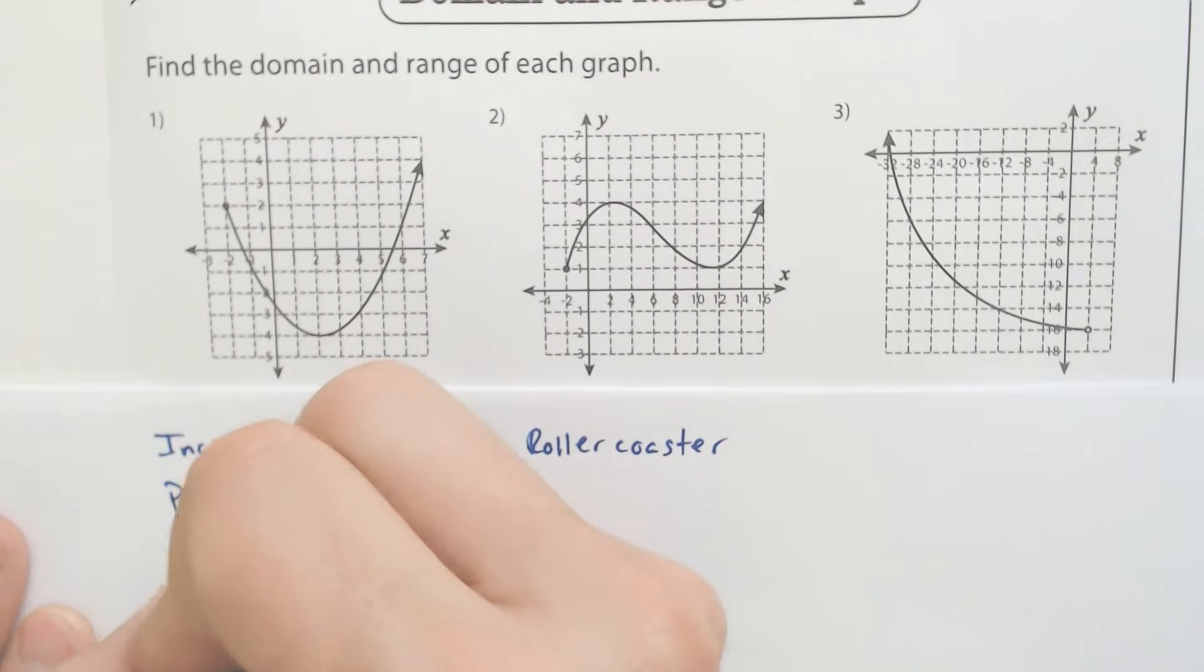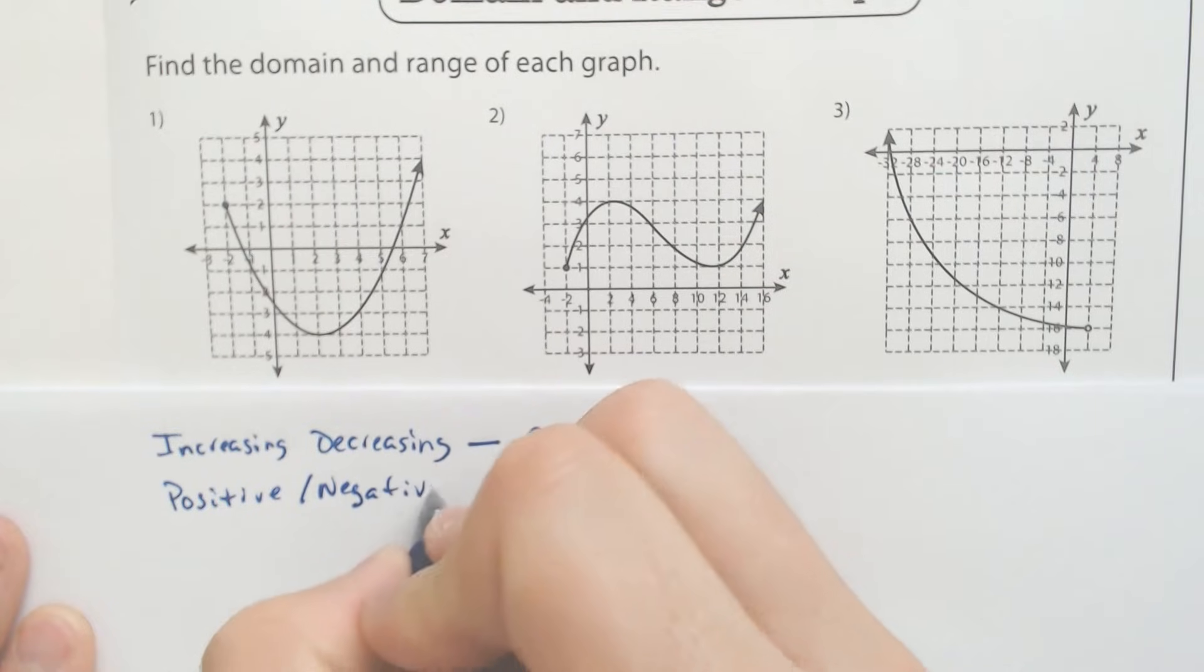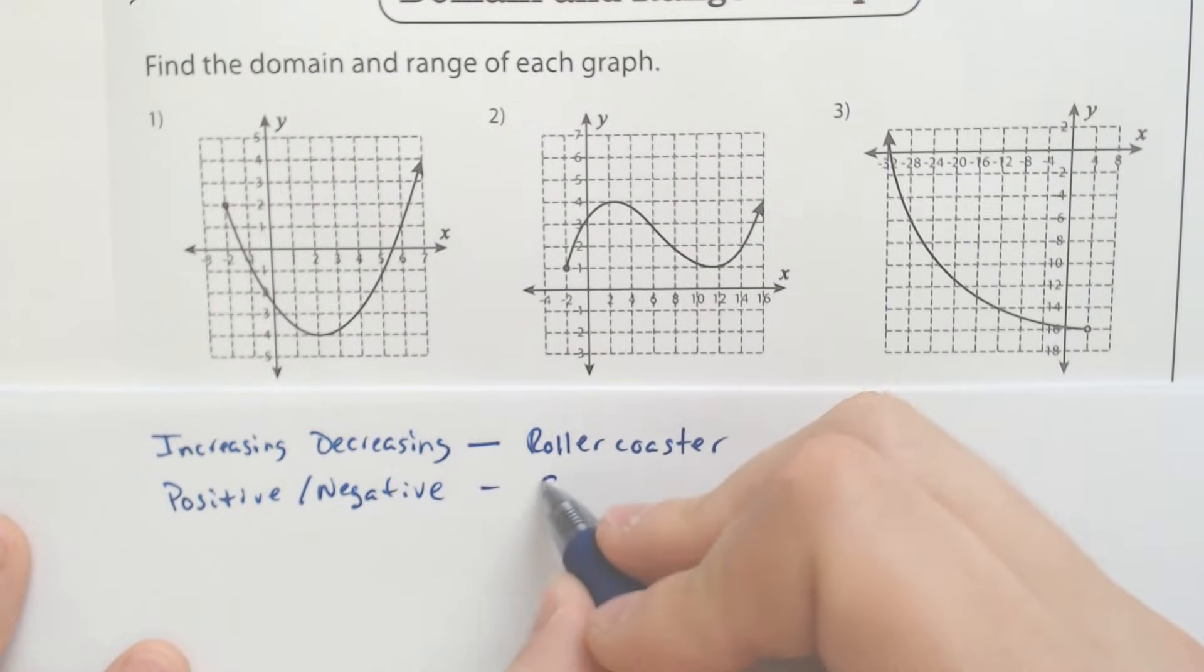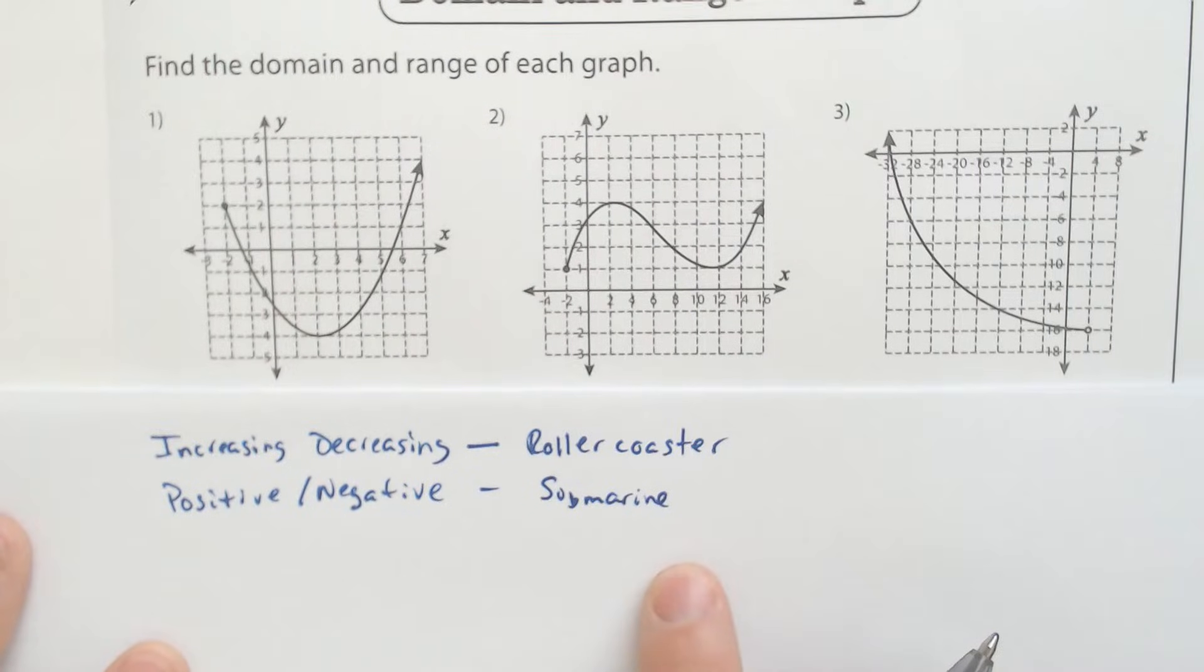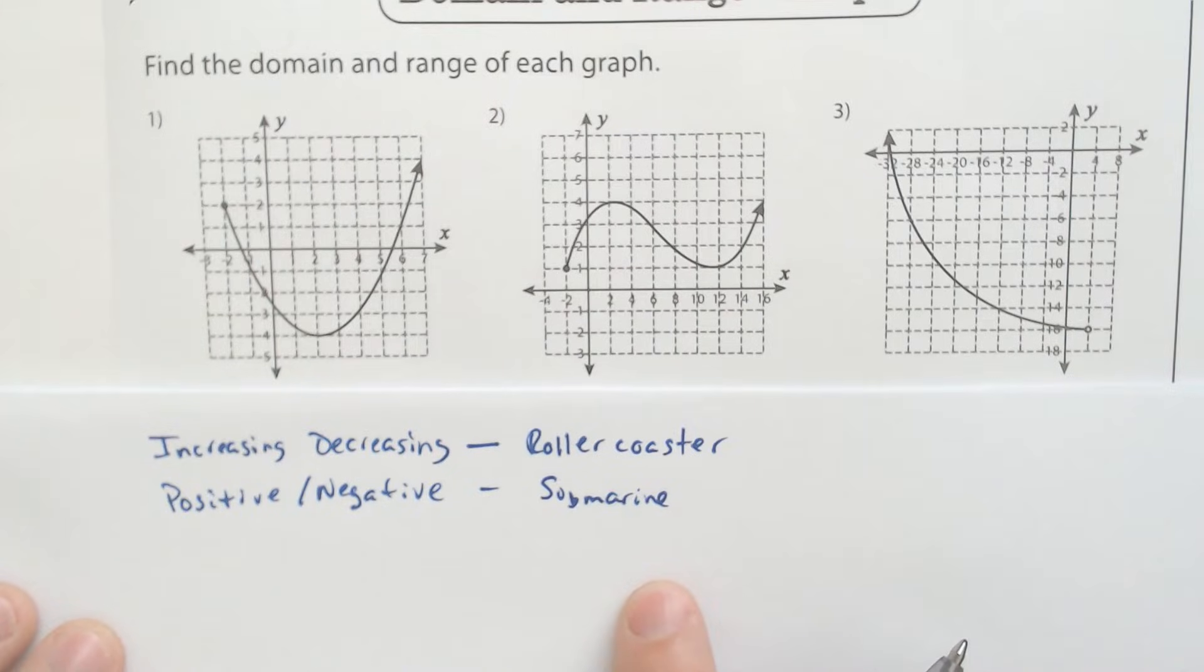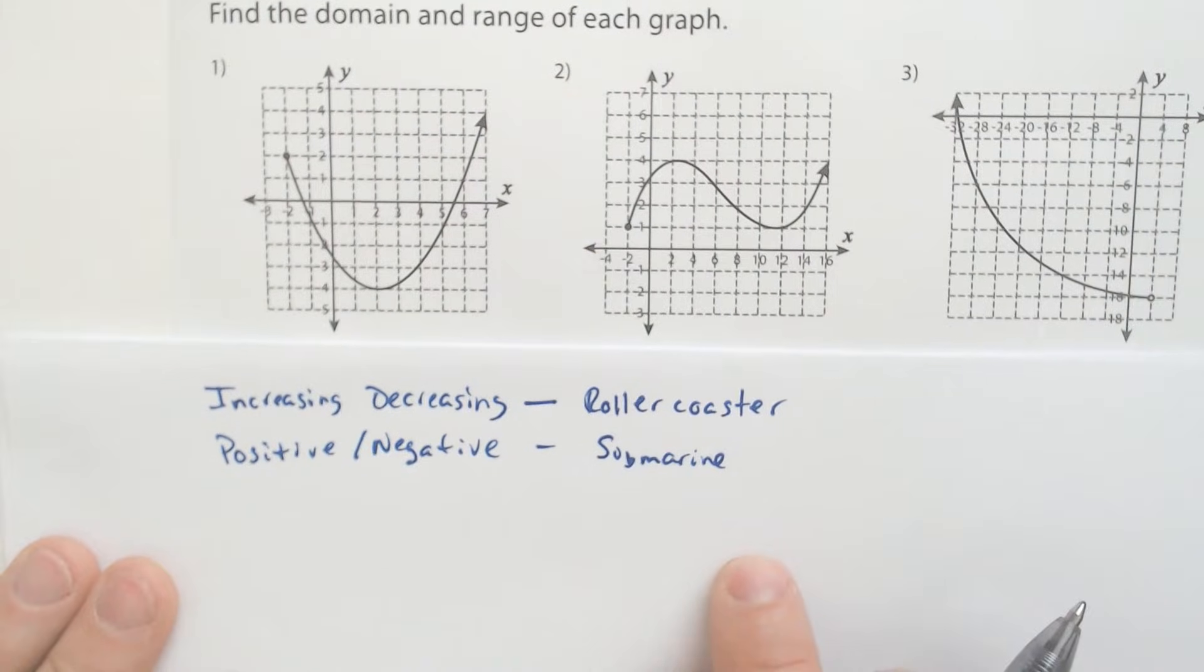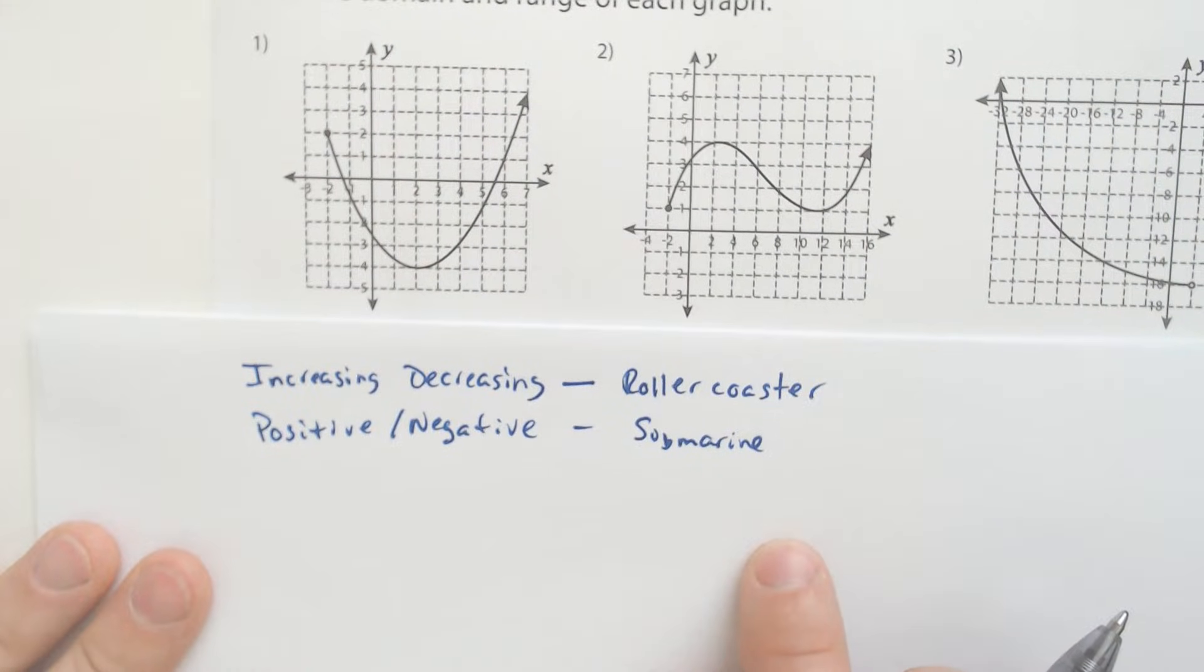Whereas if it's positive and negative, I want you to think like a submarine, specifically a submarine that can be above water and then maybe fly out of the water or below water. So we're going to think like that, and that will help us when we're determining what is going on.